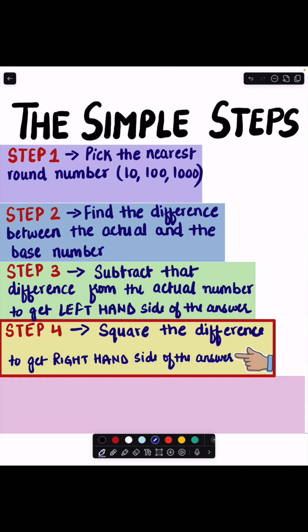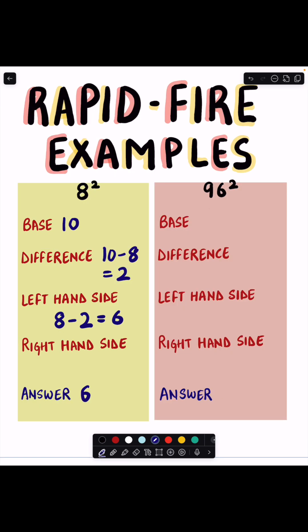Step 4: Square the difference to get right hand side of the answer. So this is our difference and when we square it, it gives us 4. And now we will write it on the right hand side and here is our answer: 64.